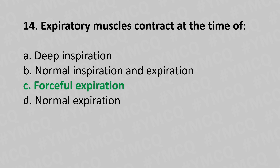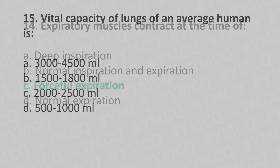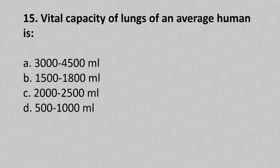Now let's move to question number fifteen. Vital capacity of lungs of an average human is: option a, 3000 to 4500 ml; option b, 1500 to 1800 ml; option c, 2000 to 2500 ml; option d, 500 to 1000 ml. And the answer is option a, 3000 to 4500 ml.